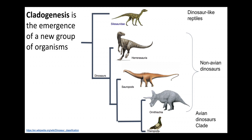Previously there were no bird-like dinosaurs, and eventually a distinct group of dinosaurs emerged. All of them have gone extinct except our current birds, which are actually currently considered to be dinosaurs.